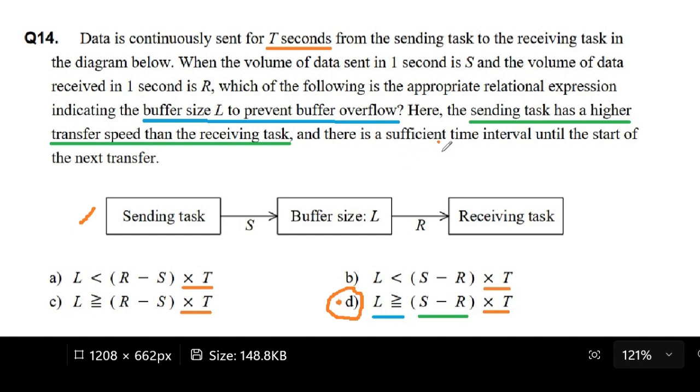Because, as we can see here, the parts about the sending task having a higher transfer speed than the receiving task should already give us an idea of what we are going for. For example, in this case, it would be something like S minus R and not R minus S.